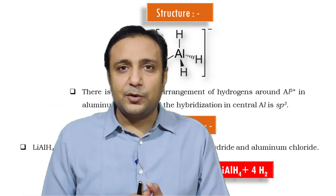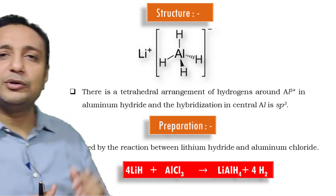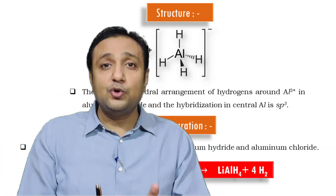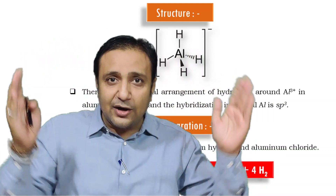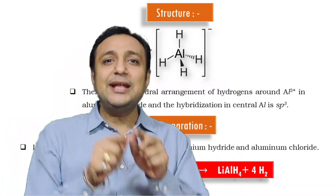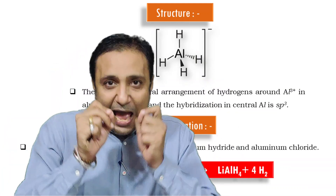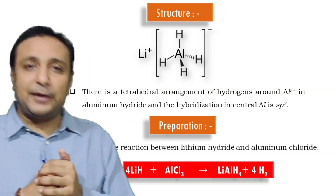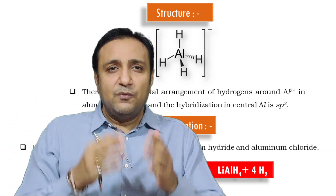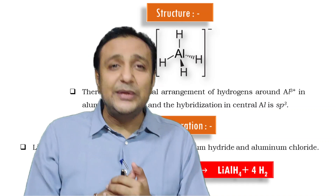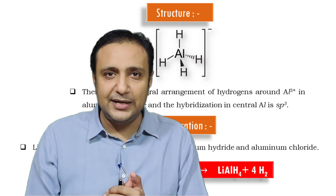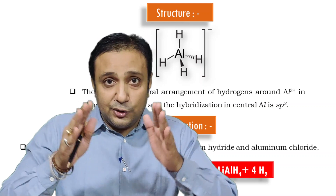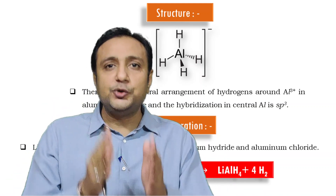Regarding the structure of lithium aluminium hydride, it has a tetrahedral arrangement. All the hydrogens are arranged in a tetrahedral manner surrounding the aluminium metal, and aluminium is sp3 hybridized in this molecule. For its preparation, when lithium hydride is reacted with AlCl3, it produces lithium aluminium hydride and hydrogen gas. This preparation involves a very violent reaction and great care should be taken.